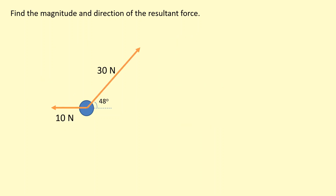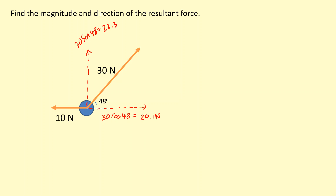In this situation, the 30 newton force is not at right angles to the 10 newtons, nor is it along the same line, so it's best to resolve it into its horizontal and vertical components. Horizontally, the component adjacent to the 48-degree angle is going to be 30 cosine 48, which gives us 20.1 newtons. The vertical component is going to be 30 sine 48, which gives us 22.3 newtons. The forces in opposite directions — 10 newtons and 20.1 newtons — give us a resultant towards the right of 10.1 newtons.